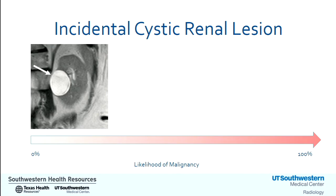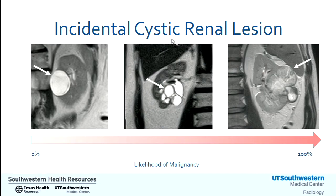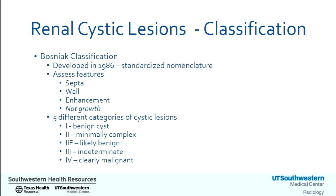The renal cyst is just one of several lesions collectively known as cystic renal lesions, which may be of benign or malignant etiology. The goal of the radiologist, when we encounter a cystic lesion, is to provide you with the likelihood of malignancy to help guide further management. We do this through the Bosniak classification system, first developed in 1986, which has withstood the test of time. The system provides standardized nomenclature to classify cystic lesions using certain imaging features. Notably, growth and size are not included in the features we assess.